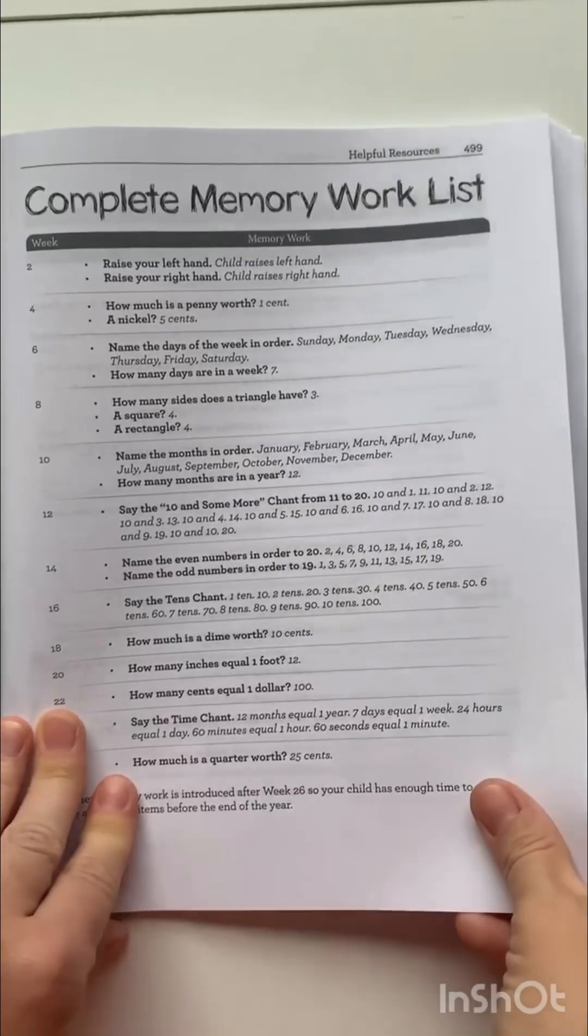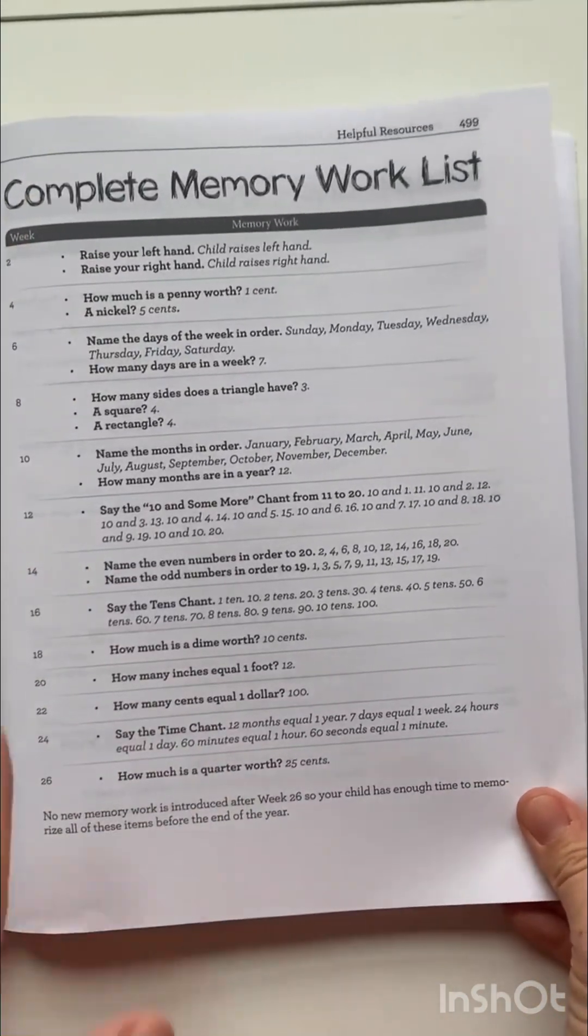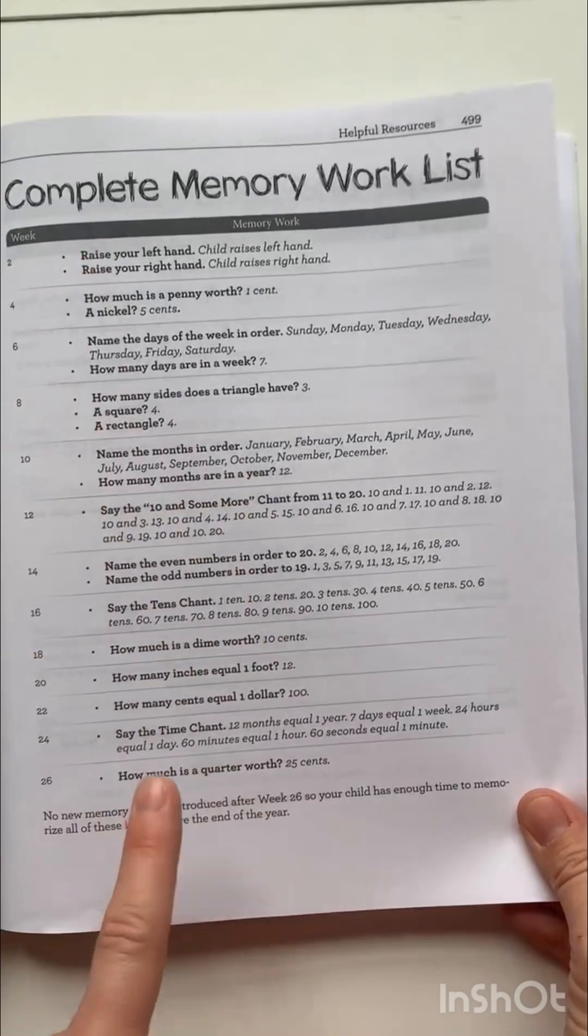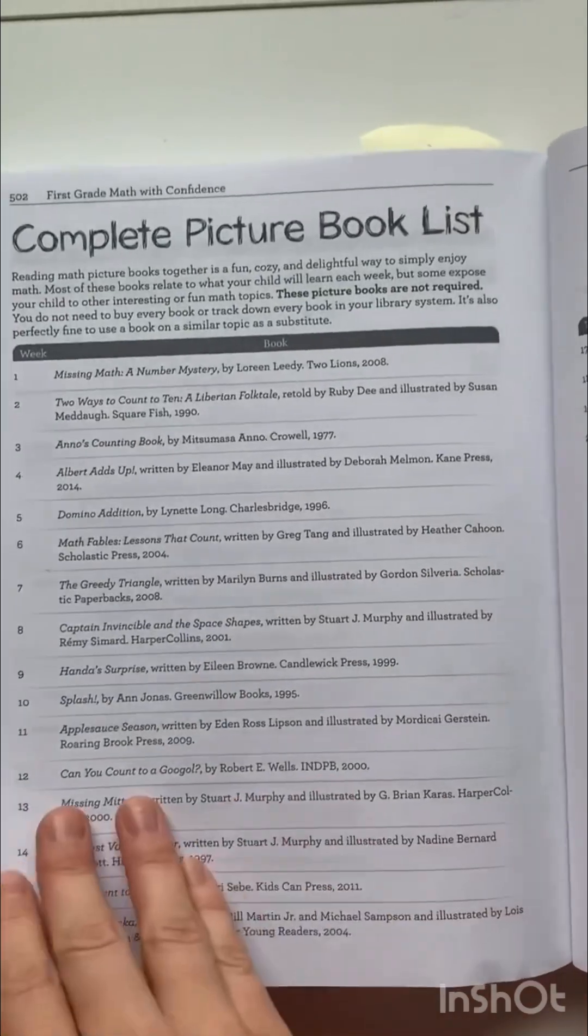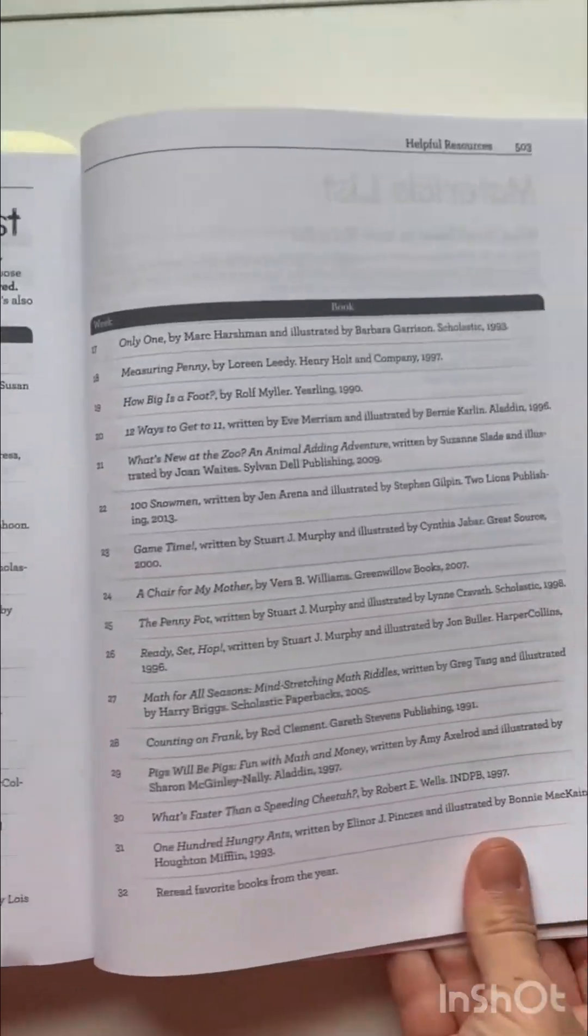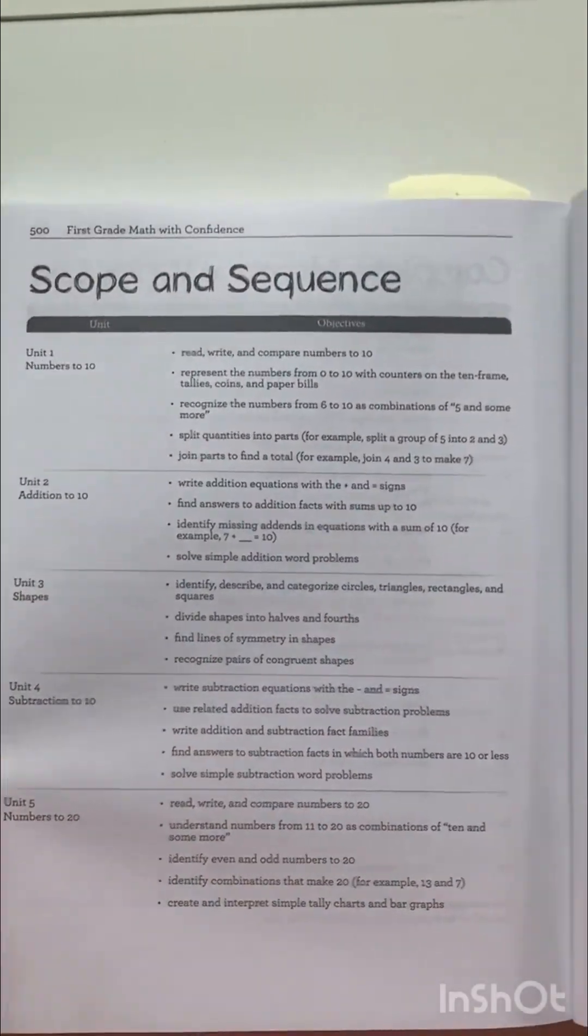At the end of the week are the answer keys to the lessons for that week. Okay, hang with me. I'm going to show you now what's in the back of the book. You've got your complete memory work list. So all the things that you will be memorizing as well as the weeks that you're practicing it. You also have a complete picture book list. How nice is that? Lots of good literature there. I skipped a page. This is the scope and sequence.